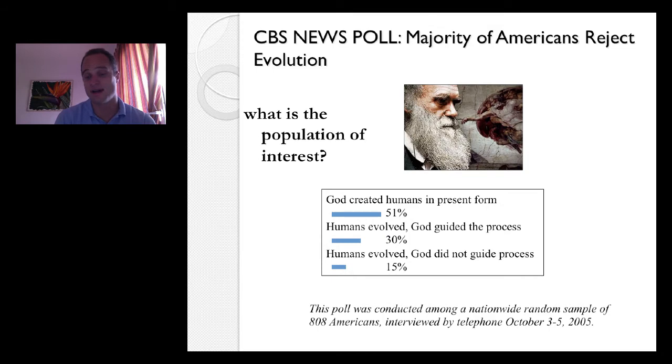Well, let's see. Down here in italics, it says this poll was conducted among a nationwide random sample of 808 Americans interviewed by telephone. And so a sample of 808 Americans is used to extrapolate what the country thinks. However, it's not specifically spelled out here. But my guess is that they're not, the CBS isn't interested in what my three-year-old daughter thinks about the evolution of humans. And so my guess is, is that their population of interest is adult Americans. And if you look into the fine print of their study, you may get some more information there.